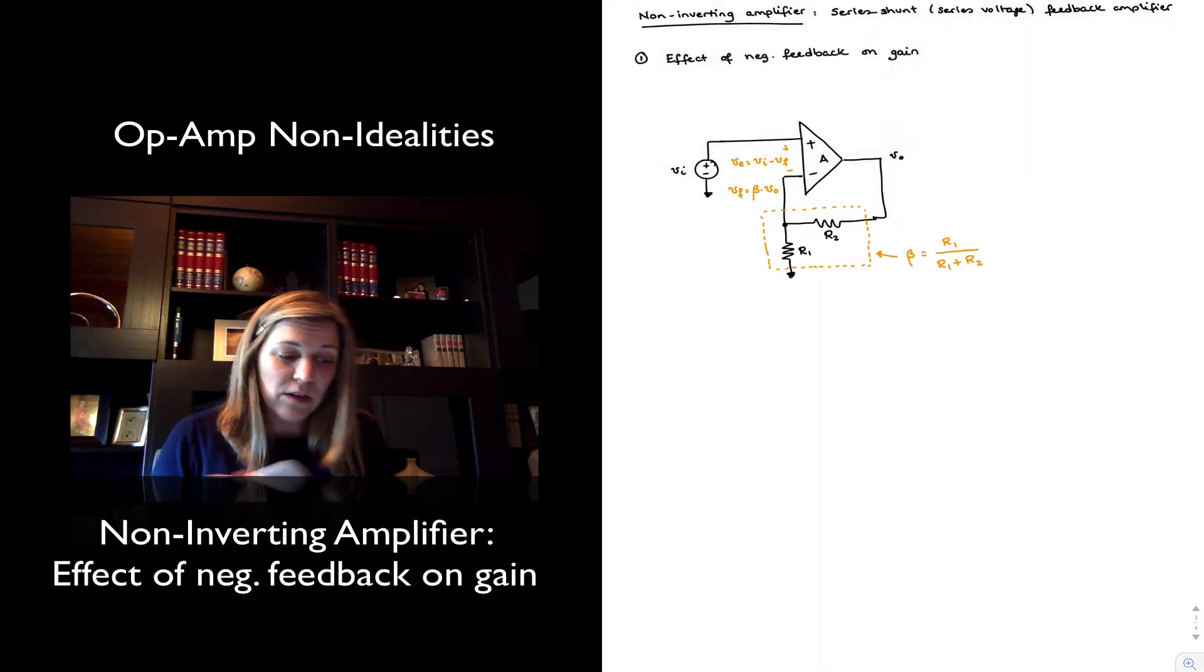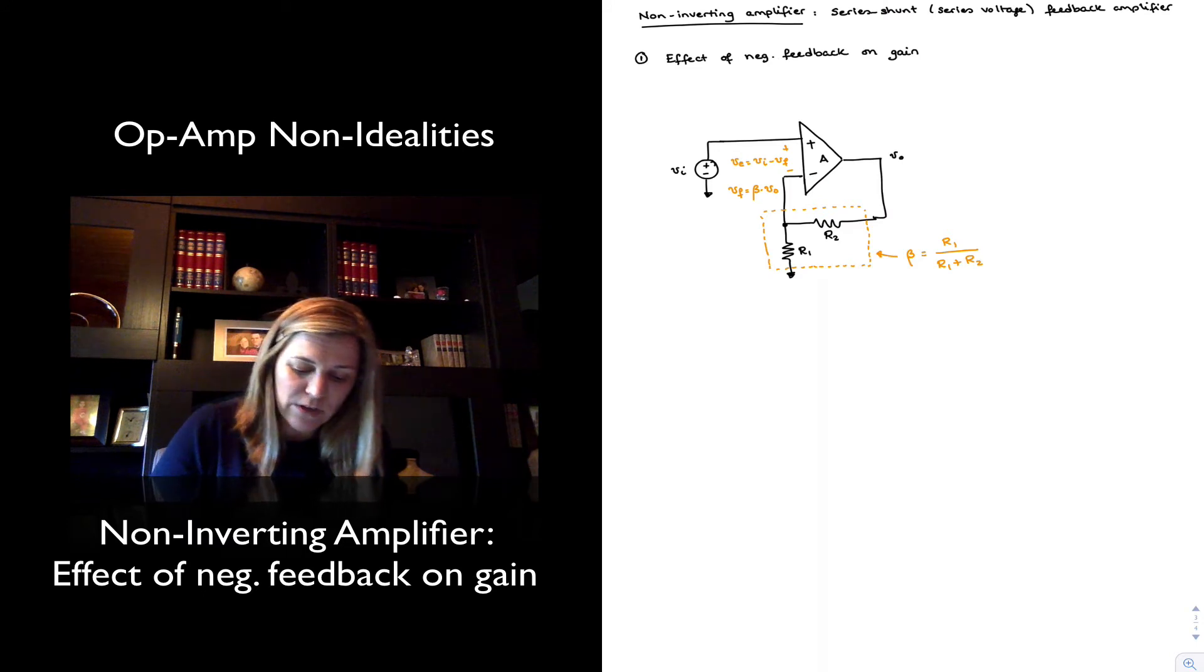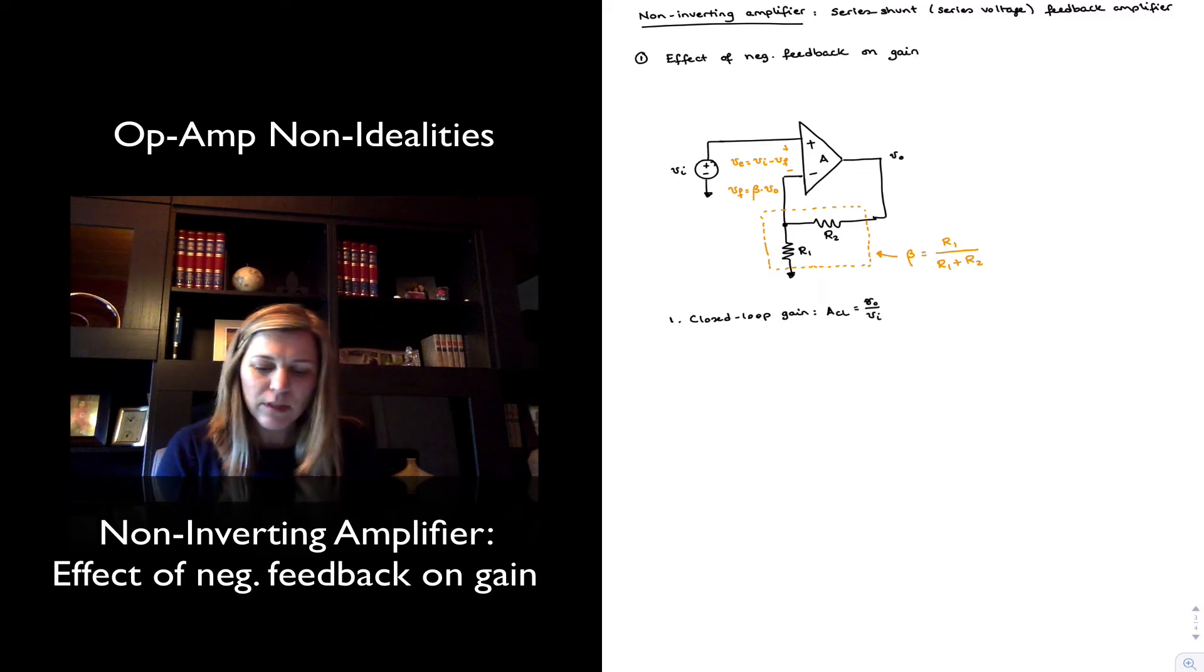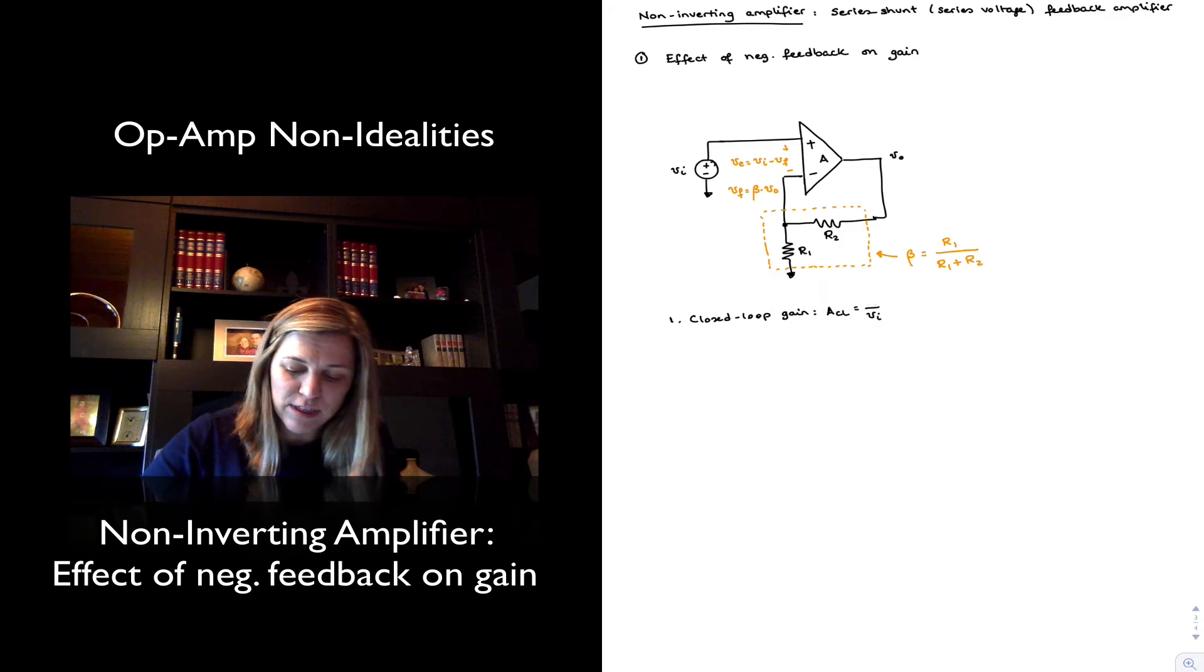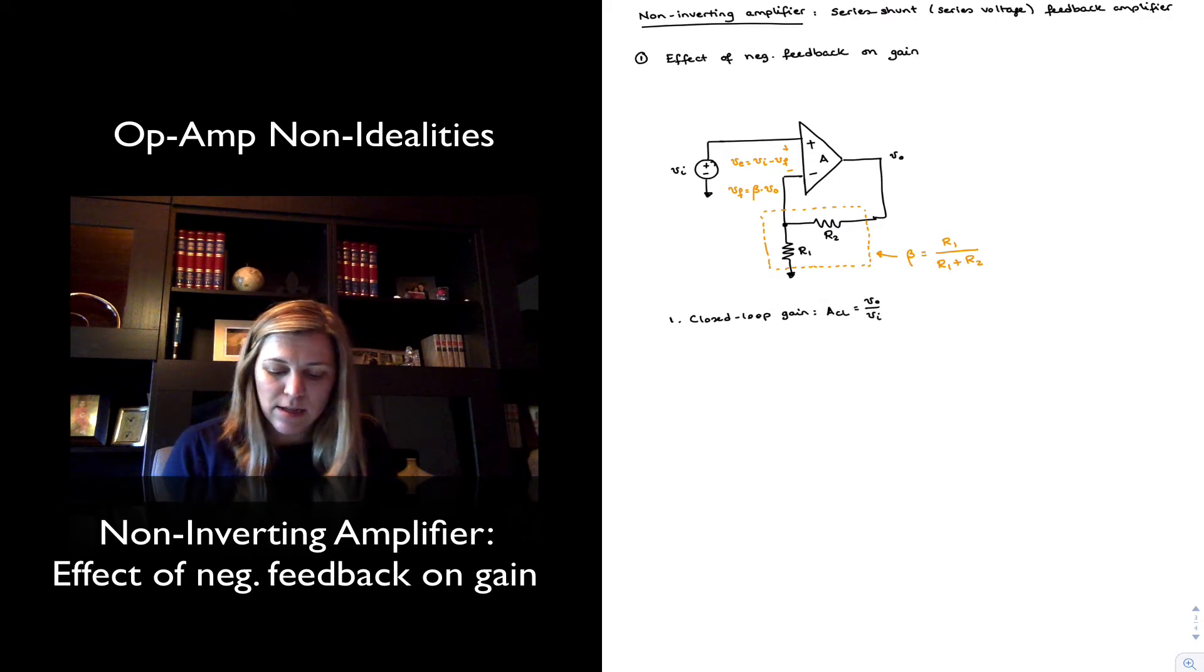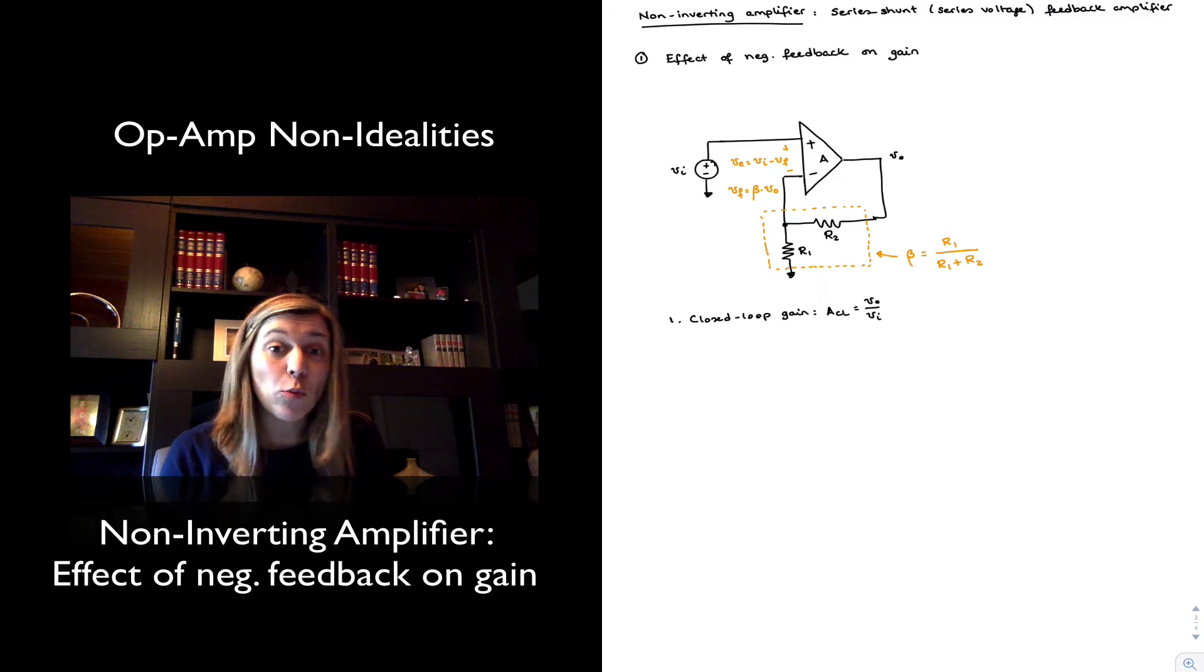We can perform similar calculations to what we previously did to figure out the closed-loop gain of the system ACL, which is, in this case, Vout over VIN. In the previous example, we did it more generally using Xout and Xin, because signals can really be voltages or currents in electronic circuits. But in this case, we are dealing with a voltage amplifier, so we're going to be using voltage type of signals. The closed-loop gain is to be differentiated from the open-loop gain. We already know what the open-loop gain of the op-amp is. It's A, as labeled in the op-amp.